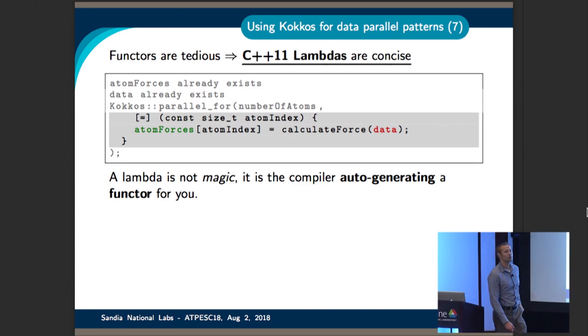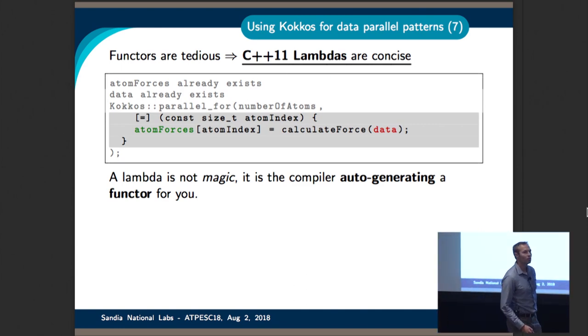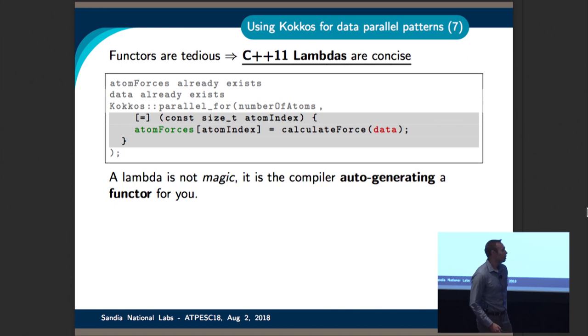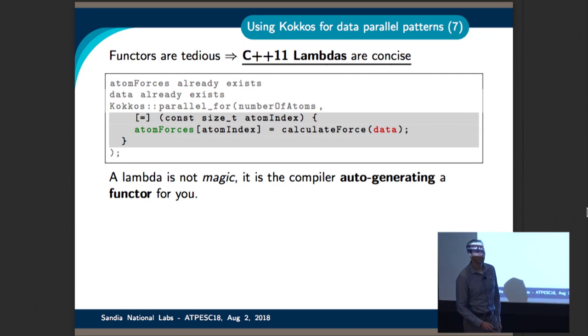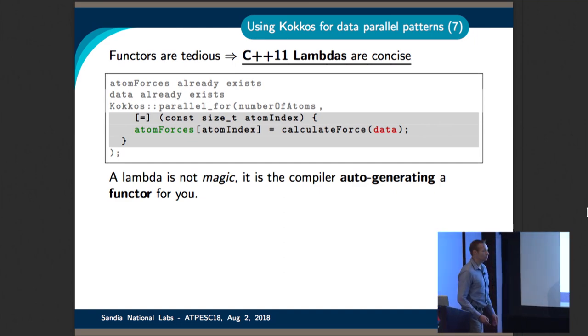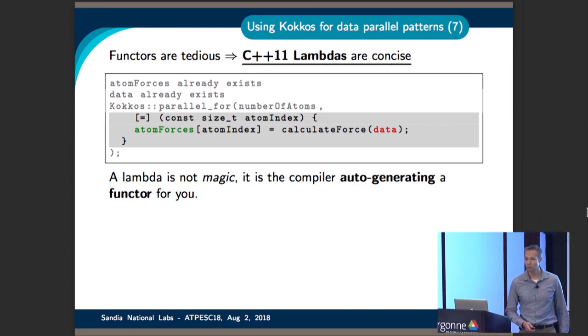An audience member notes the similarity to TBB. The presenter acknowledges that could have been an initial motivation for Kokkos but can't confirm as it was before their time on the project. Clarifying a question: 'number of iterations' refers to the iteration range, which in the case of flattened parallelism is the number of things you're going to parallelize across — not MD-specific terminology.